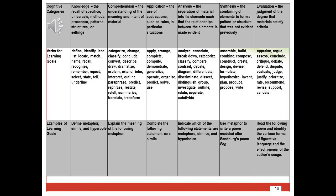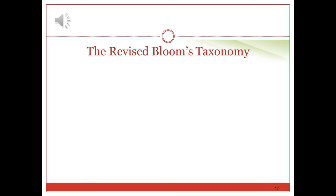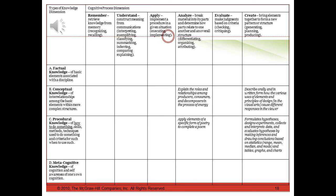The revised Bloom's taxonomy includes additional information: in addition to categories of cognitive processing, it includes different types of knowledge, and the terminology for cognitive processes is slightly different. With the revised taxonomy, we have six levels of cognitive processing ordered from simple to complex: remember, understand, apply, analyze, evaluate, and create. The knowledge category is now labeled 'remember' and the synthesis category was replaced with 'create.' The revised taxonomy also introduced a new dimension: the type of knowledge that individuals work with — factual, conceptual, procedural, or metacognitive knowledge.